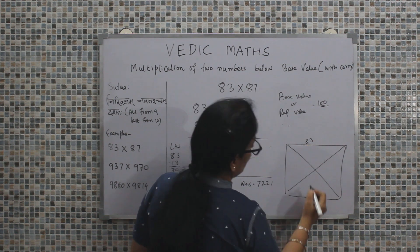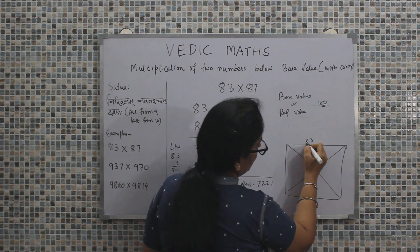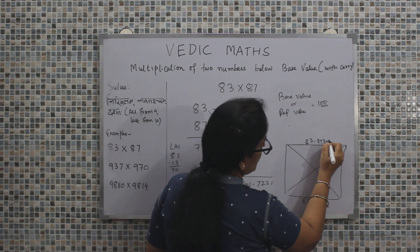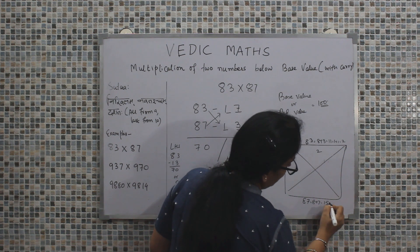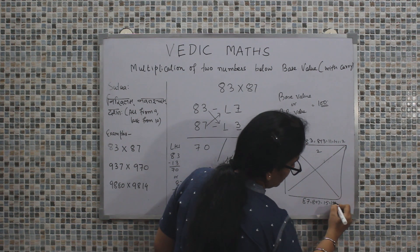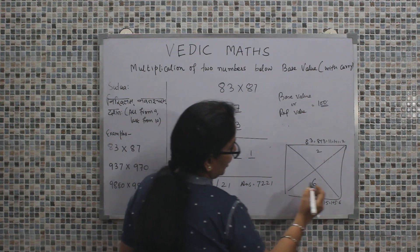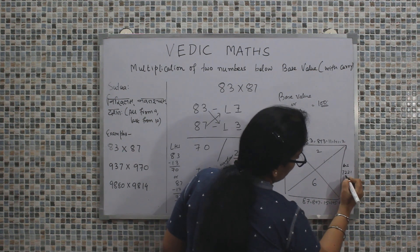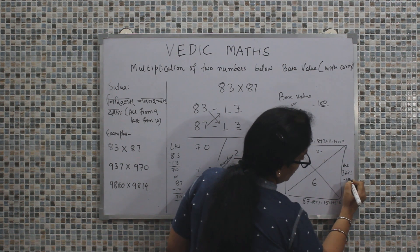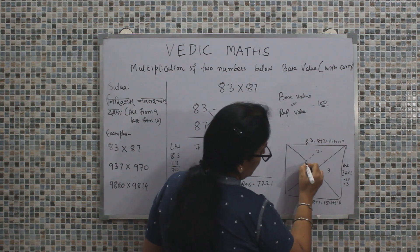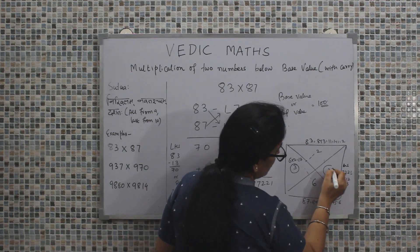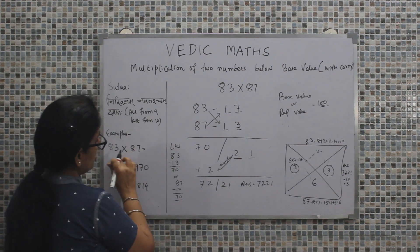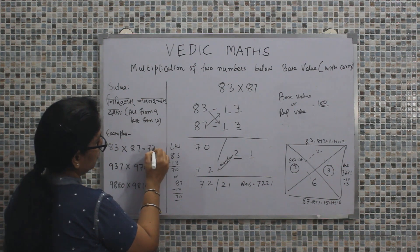We can verify this answer using the concept of digital sum. Our first value was 83: 8 plus 3 is 11, and 1 plus 1 is 2. Second value 87: 8 plus 7 is 15, and 1 plus 5 is 6. For our answer 7221: 7 plus 2 plus 2 plus 1 is 12, and 1 plus 2 is 3. Now multiplying the digital sums: 2 into 6 is 12, and 1 plus 2 is 3. Both digital sums match, so our answer is correct. The answer for 83 into 87 is 7221.